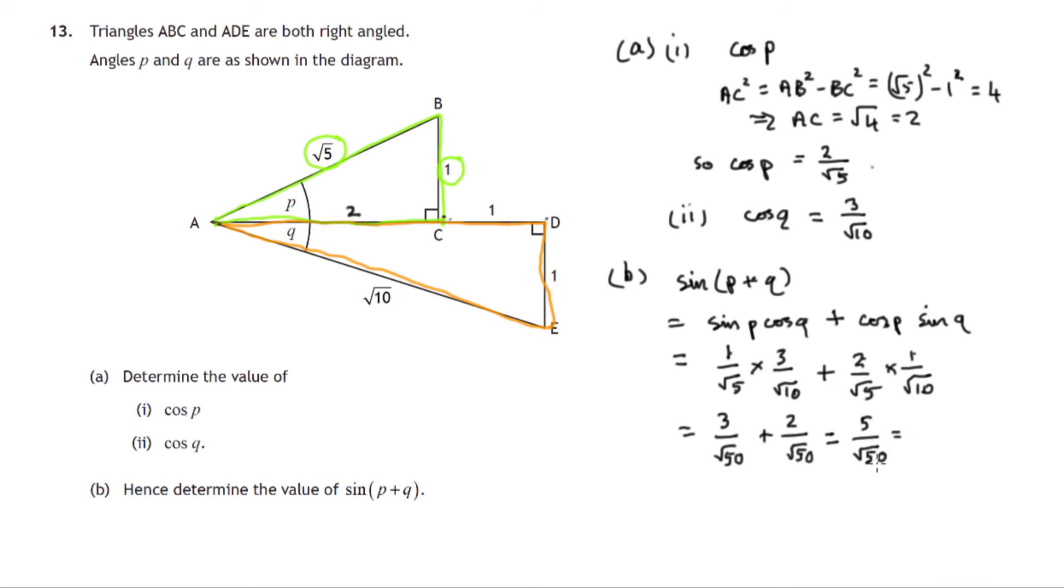Now, we can certainly simplify root 50. It's 25 times 2. And the root of 25 is 5. And the root of 2 is just the root of 2. So there's root 50 simplified to 5 over root 2. Now we can cancel by 5. So we get 1 over root 2.